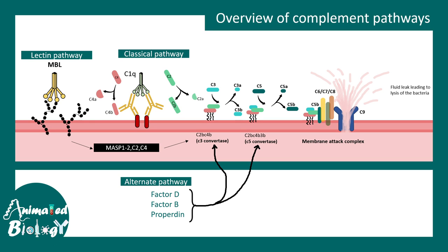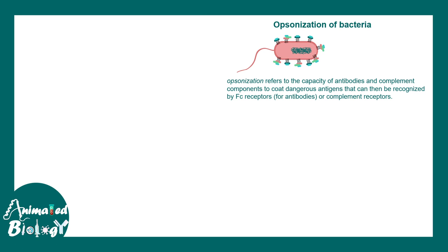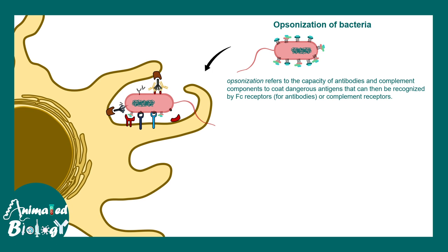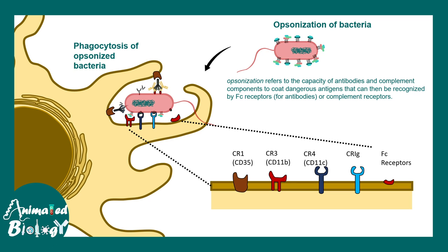The ultimate goal is to create the membrane attack complex and lead to fluid leakage. The complement system can also decorate bacteria with complement proteins, and this is known as opsonization. These opsonized bacteria can be engulfed by phagocytic cells such as macrophages or dendritic cells. This phagocytosis is triggered by several receptors present on the surface of these cells such as CR1, complement receptor 3, CR4, Fc receptor, etc.